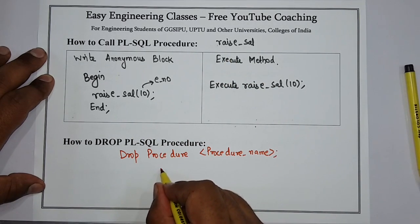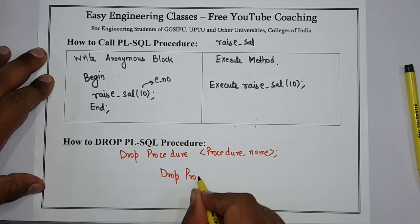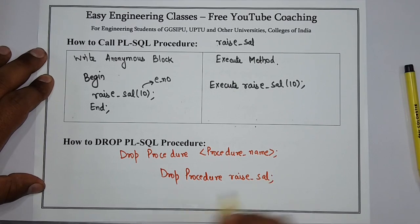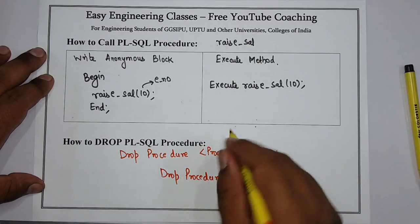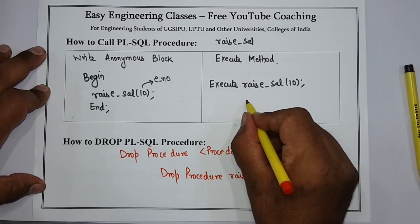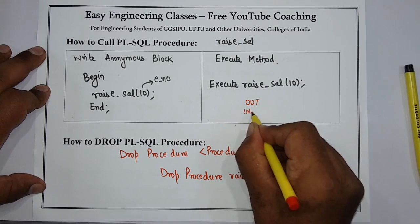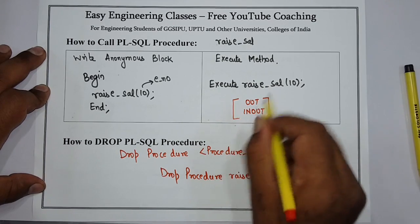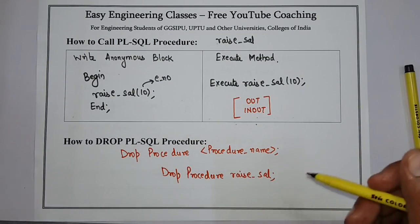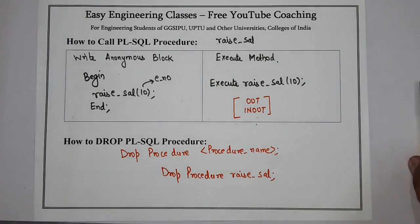Apart from IN, there are two other parameter types: IN-OUT and OUT. I will post the examples and theory of both OUT and IN-OUT in the next video, and in one of the videos I will show how to create these procedures in an Oracle 11g database. Thank you for watching the tutorial. Please subscribe to the YouTube channel for more tutorials on PL/SQL, SQL, Java, and other computer science subjects.